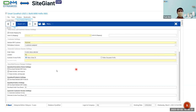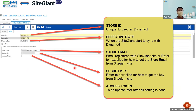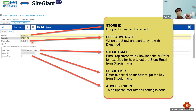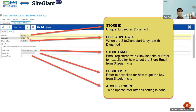We will go through this one by one. To create a new SiteGiant store, we fill in the Store ID. This is specifically for SiteGiant to identify your ID — it is not from SiteGiant, or if you want to put the name similar to your SiteGiant ID that is also fine. For the effective date, this is when SiteGiant starts to sync with Dynamo. For example, if today is the 2nd of March and you want to start synchronization on the 15th of March, you put that date here. This is when your orders will start downloading.